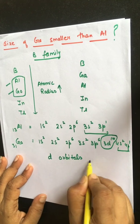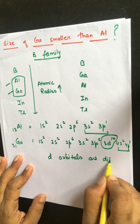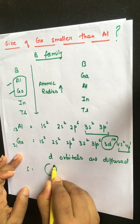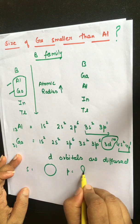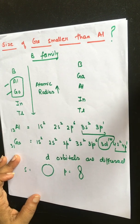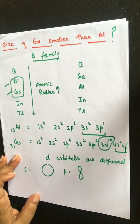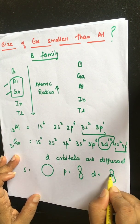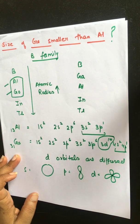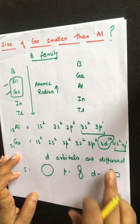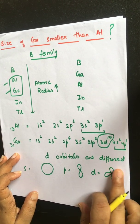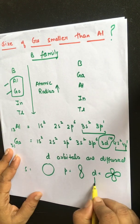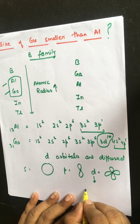When we move from aluminium to gallium, 3d electrons are filled in between. Now, we know the shapes of orbitals: s is spherical, p is dumbbell-shaped along the x, y, and z axes, and d is diffused — it is spread out. So when 10 electrons are filled in the d-orbitals, those orbitals are diffused, meaning the electrons are far apart.